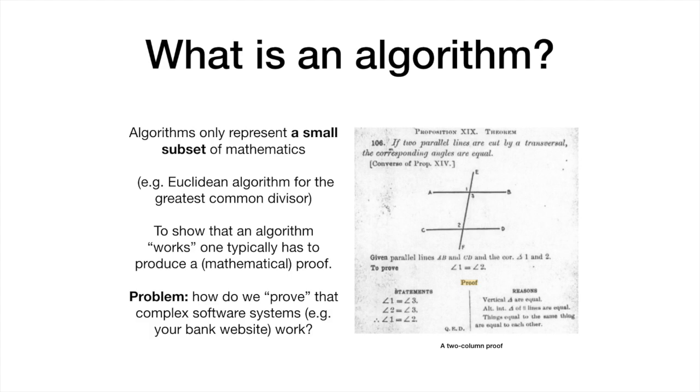Algorithms only represent a small subset of mathematics. In fact, to show that an algorithm works, one typically has to produce a mathematical proof. This is fine for simple algorithms like Euclid's algorithm for the computation of the greatest common divisor. But what about complex software systems? How do we prove that complex software systems, like your online banking system, work?